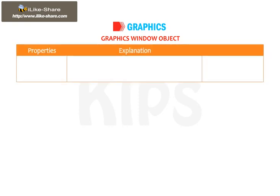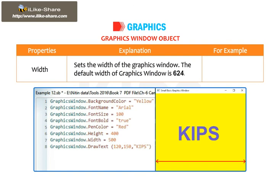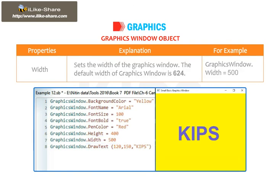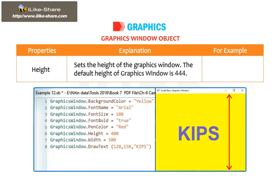Width sets the width of the Graphics Window. The default width of the Graphics Window is 624. Example: GraphicsWindow.Width = 500. Height sets the height of the Graphics Window. The default height of the Graphics Window is 444. Example: GraphicsWindow.Height = 400.